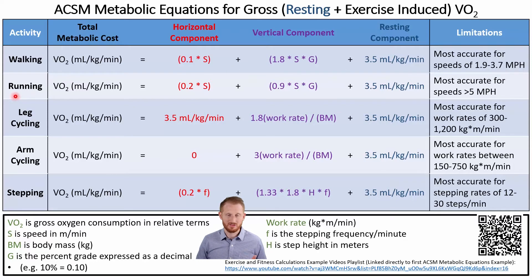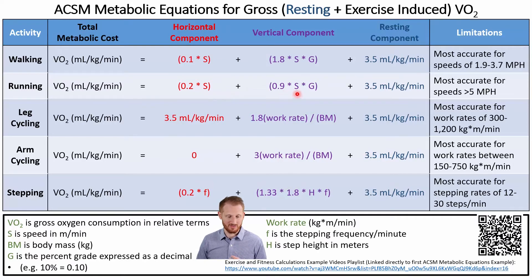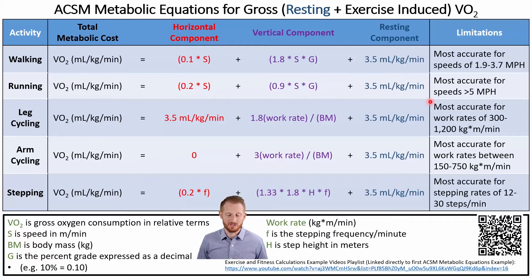Now let's look at the running equation, which is very similar to the walking equation. VO2 equals 0.2 (instead of 0.1) times speed, plus 0.9 times speed times grade, plus the resting component of 3.5. The running equation is most accurate when speed is past five miles per hour.